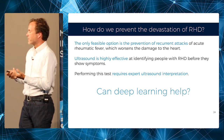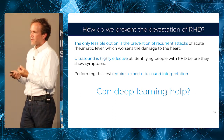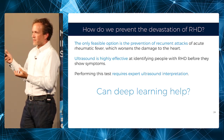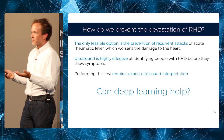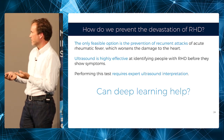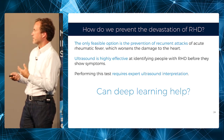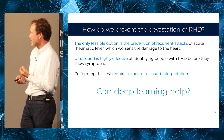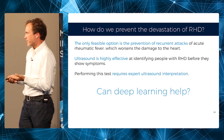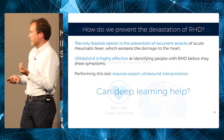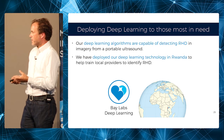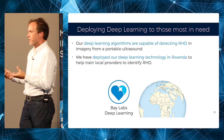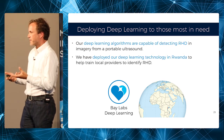Ultrasound is very effective in detecting this disease very early, before you even have symptoms. However, you need not only these low-cost devices — you also need people to interpret this data. Can deep learning help solve this problem? We are still very early on, but we were able to develop a system that can, on a portable ultrasound device, reliably detect rheumatic heart disease.